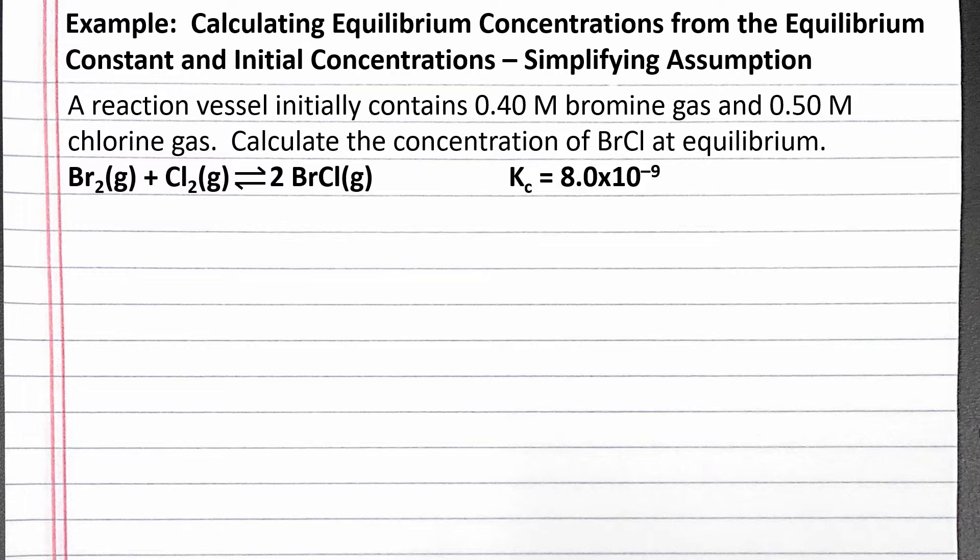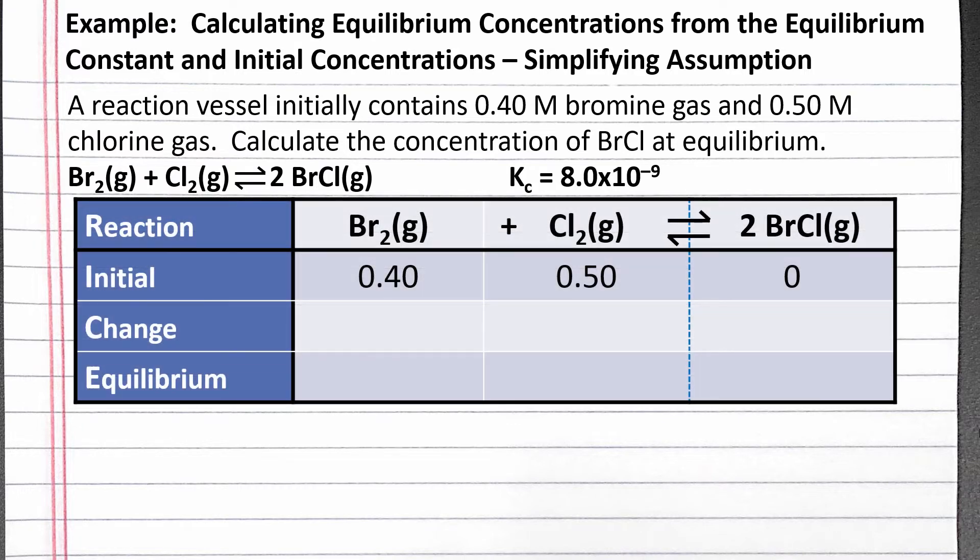Our example reads: a reaction vessel initially contains 0.40 molar bromine gas and 0.50 molar chlorine gas. Calculate the concentration of BrCl at equilibrium. We can begin by creating a RICE table with the reaction at the top and the initial concentrations in the second row. We are not told we have any BrCl gas to begin with, so its initial concentration is 0.